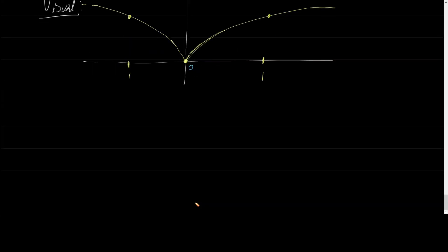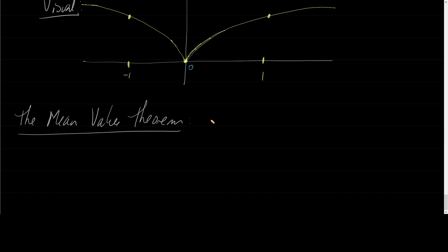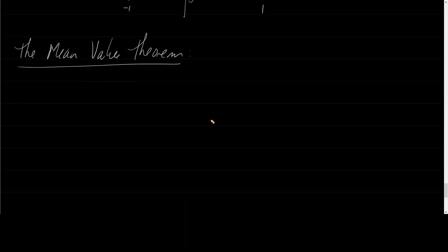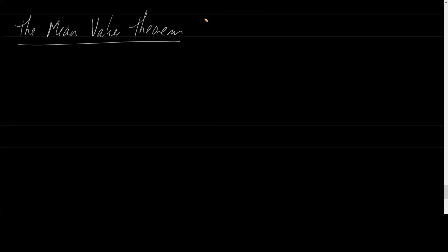That concludes Rolle's Theorem. Now let's move on to the Mean Value Theorem. The Mean Value Theorem is essentially just a more generic version of Rolle's Theorem.